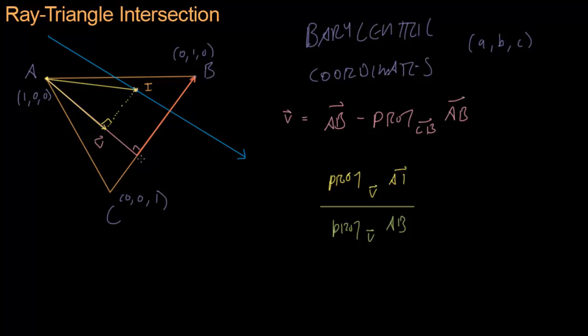Now you'll notice that if I is hanging around over here near the C, B line, then the projection of A, I onto V will be very long. It will be very near to the projection of A, B onto V. And so we're going to have something like 1 over 1, which is 1. But we want the barycentric coordinate over here to be 0. So we're going to do 1 minus that. Same thing, when I is hanging around here near A, you're going to get something like 0 over B, which is going to be 0. But 1 minus 0 will equal 1, and the barycentric coordinate around here should be 1. So this actually right here is the A part of the barycentric coordinate of I.